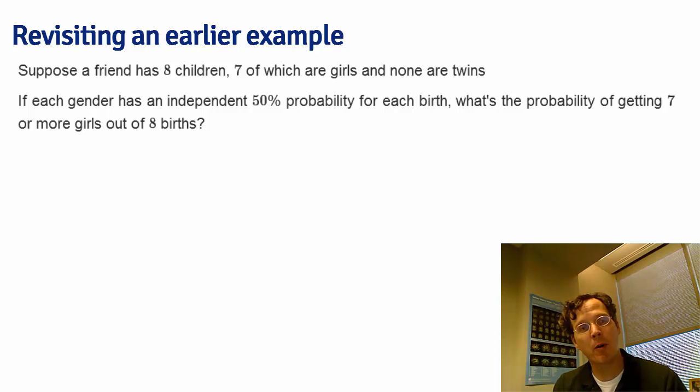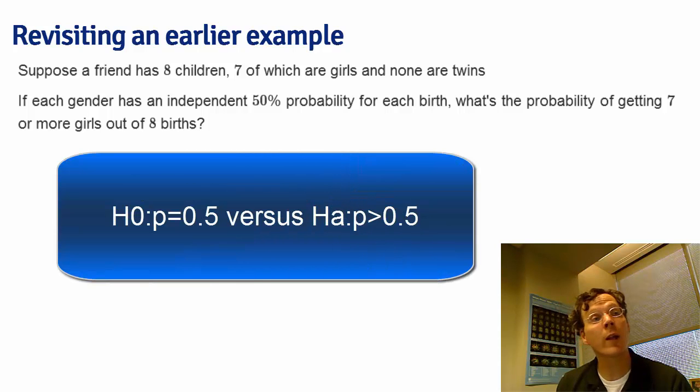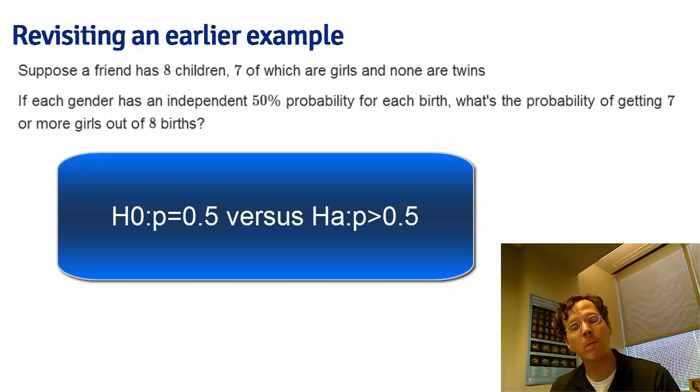Let's say p is the probability of having a girl. The null hypothesis is H0: p = 0.5 versus the alternative Ha: p > 0.5.